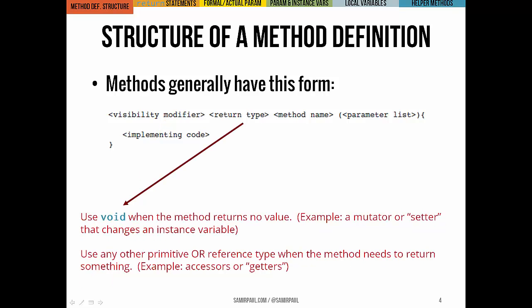If our method doesn't return a value, we'll set its return type to void, and that's often the case for mutators which change an object's instance variables and don't necessarily return a value to us.